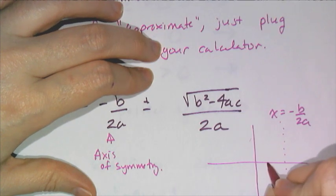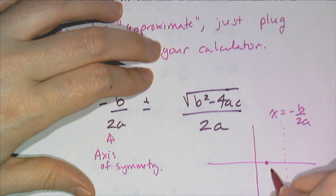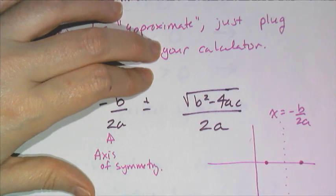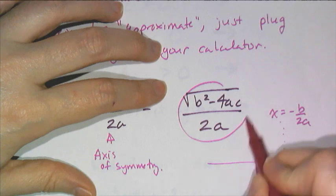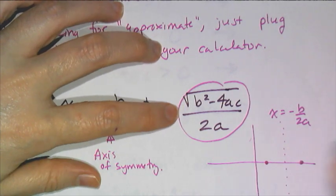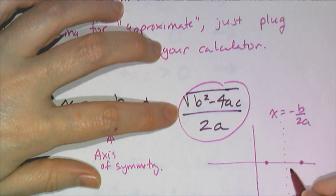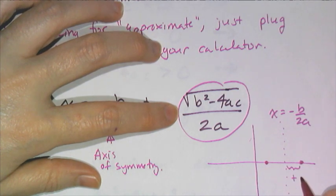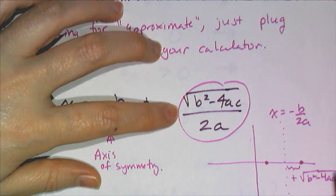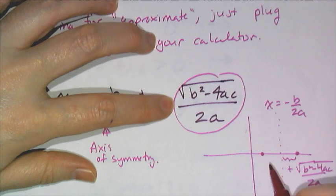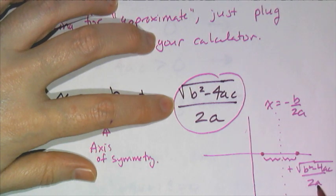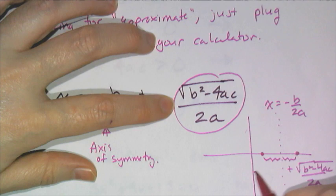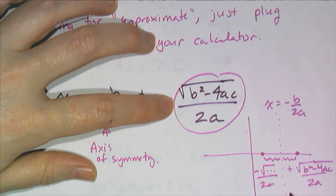And we know from studying parabolas and their properties that this axis of symmetry cuts the parabola in half. And if I have a point on this side that's a certain distance, then that same distance away is another point. And so what this thing here is, this is what you have to add and subtract to get these two points. So this distance here is the plus square root of b squared minus 4ac over 2a. And this distance here is also square root of b squared minus 4ac over 2a.